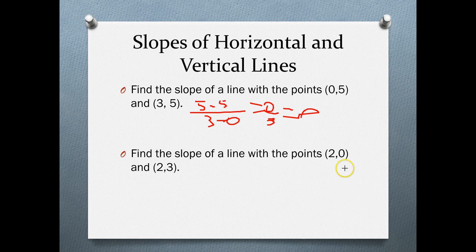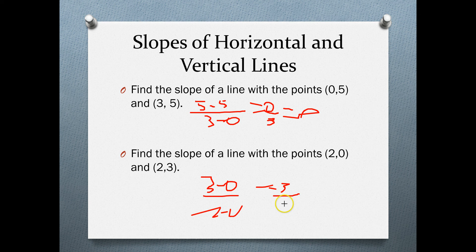The second example is a vertical line. Let's find the slope. We'll call one point x2 and y2, and the other x1 and y1. So: 3 minus 0 over 2 minus 2 gives 3 over 0. When you divide any number by 0, the slope becomes undefined. So the slope of a vertical line is undefined. If a teacher asks you, just say undefined.